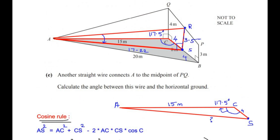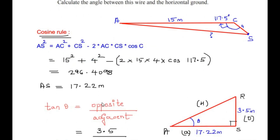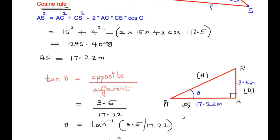We used the cosine rule and the trigonometric ratio tan to find all the required angles. I hope you have understood all the steps. If you know any other way of solving this example, please comment below. If you are enjoying my videos, please like, share, and subscribe to my channel. Thank you for watching.